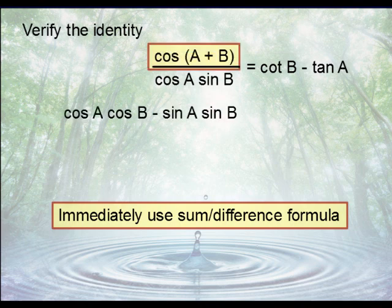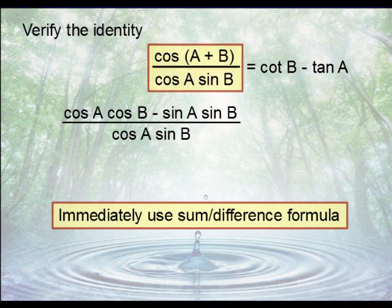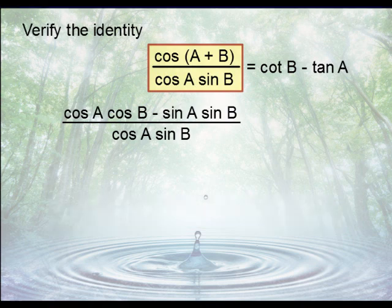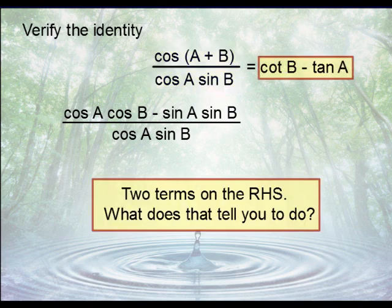That's the cosine of A times the cosine of B minus the sine of A times the sine of B. We mustn't forget that denominator either. So now what to do? Well, if you look at the right-hand side, you will notice that there are two terms. So what does that tell you to do?